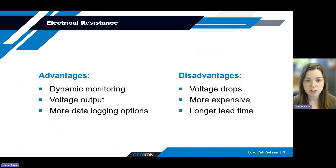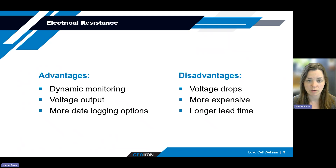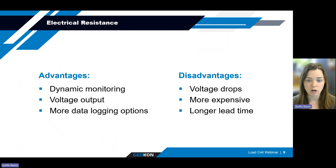Looking at some of the advantages and disadvantages of the electrical resistance load cell: typically it is used for dynamic monitoring as it's a voltage output instrument. They also have a wide range of data logging options and may be a good solution where there's an existing data logger that isn't compatible with vibrating wire technology. Although the voltage output is more universally data logged, a voltage signal will drop over long cable lengths — typically over 300 meters. Additional hardware can be installed at the data logger to overcome this voltage drop if needed. Because of the more complex construction compared to the vibrating wire version, they do tend to be a bit more expensive and can carry a longer lead time.